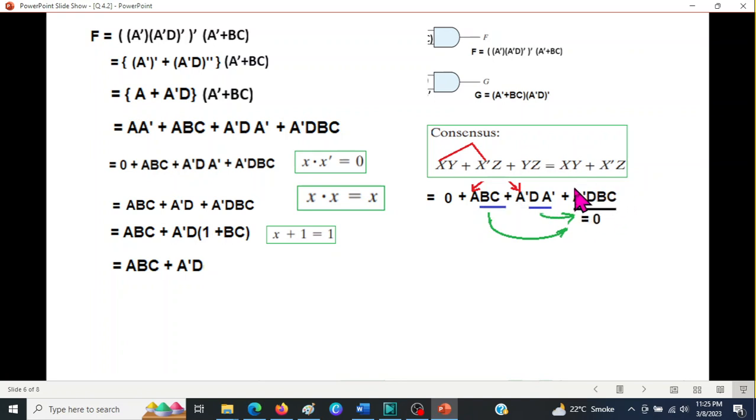Now you can see there is an A here and A' here. And this term we want to check. Does it contain the remaining of A and A'? The remaining of A is BC, so it is there. And remaining of A' is D, it is there. Therefore, this term will become 0. So from here, this is our answer. This is our final answer for F.